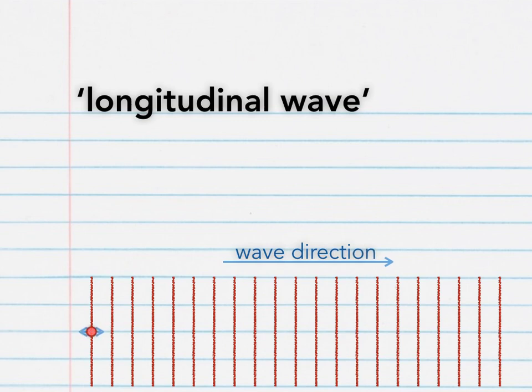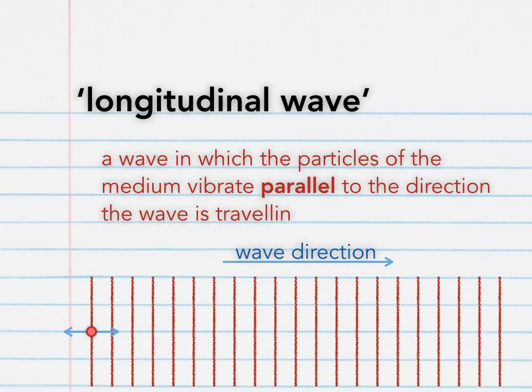The red dot here represents an air molecule, which vibrates from left to right. In other words, parallel to the direction of the wave. A longitudinal wave is, therefore, a wave in which the particles of the medium, air in this second example, vibrate parallel to the direction the wave is traveling in.